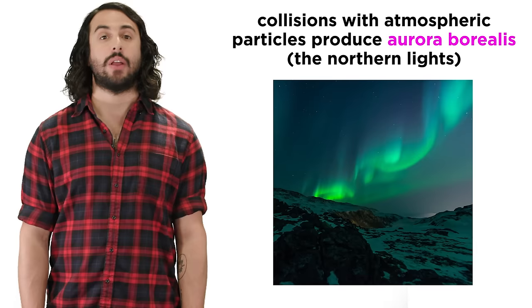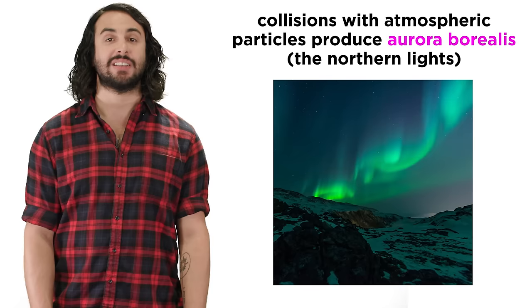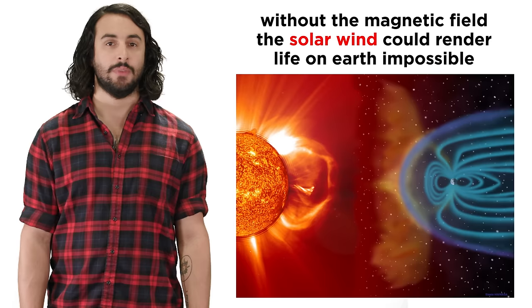This field interacts with high energy charged particles that race towards us from the sun, and deflects them towards the magnetic poles to produce the aurora borealis, when these particles collide with molecules in our atmosphere. These become excited and release colorful light upon relaxing back to the ground state.